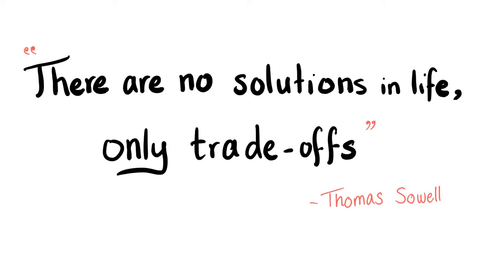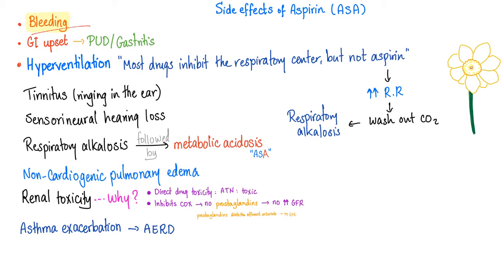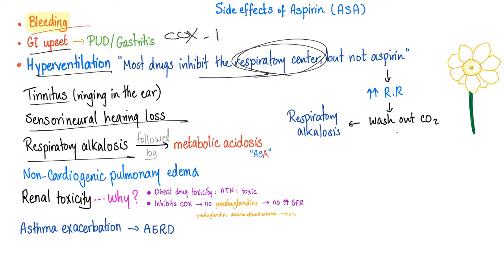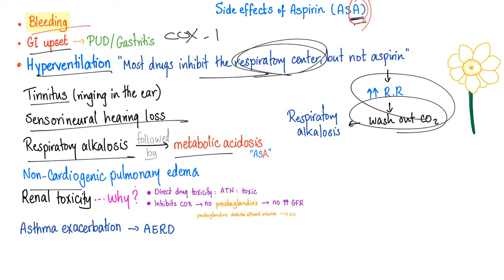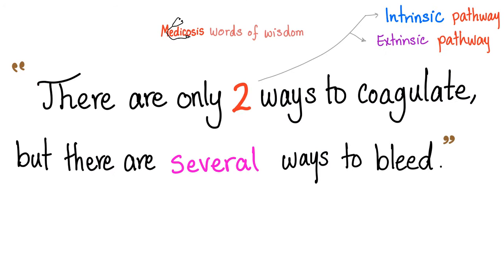There are no solutions in life, only trade-offs. Aspirin can protect you from thrombosis, but it can also make you bleed. Side effects of aspirin: bleeding — because it inhibits thromboxane A2. GI upset — because it inhibits cyclooxygenase 1. Hyperventilation — because it stimulates the respiratory center. Tinnitus, sensorineural hearing loss. Respiratory alkalosis due to hyperventilation, followed by metabolic acidosis because it's acetylsalicylic acid. Non-cardiogenic pulmonary edema. Renal toxicity due to direct toxicity causing acute tubular necrosis, and inhibition of cyclooxygenase leading to reduced prostaglandins and decreased GFR.